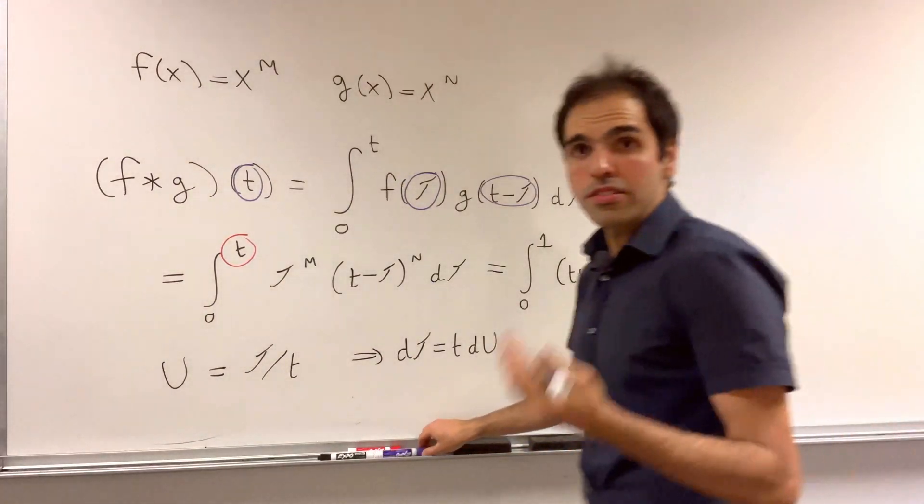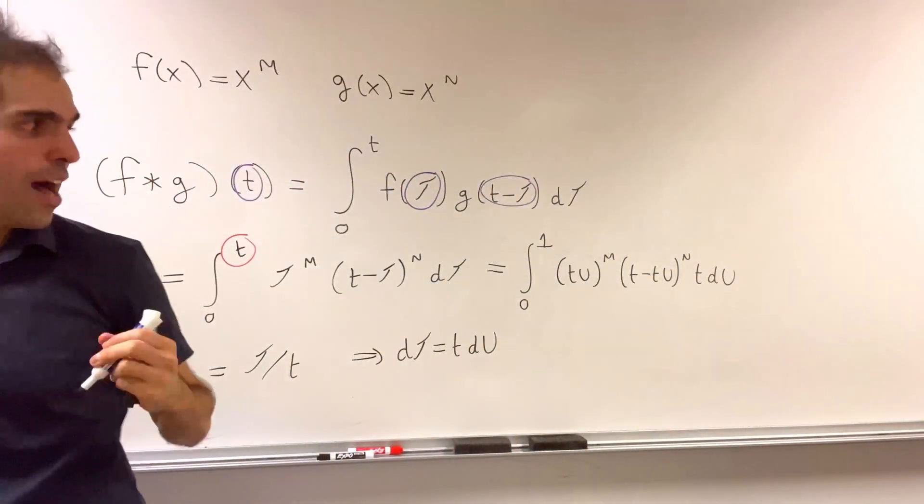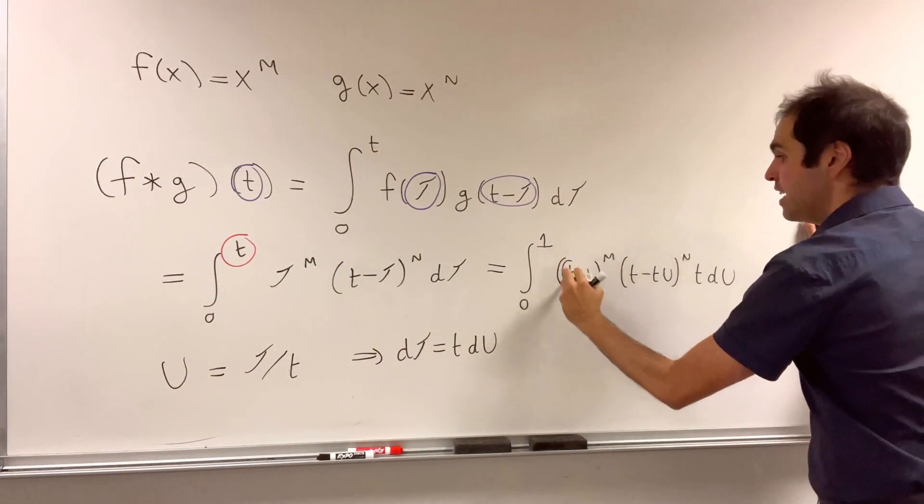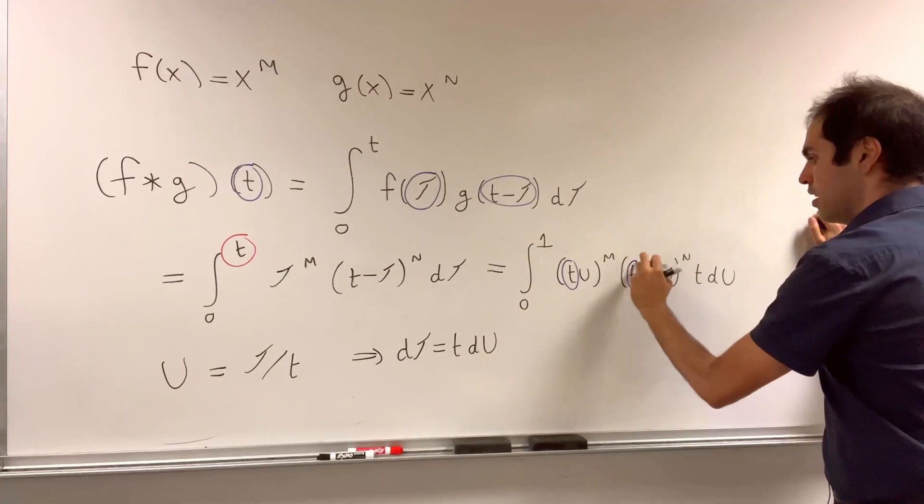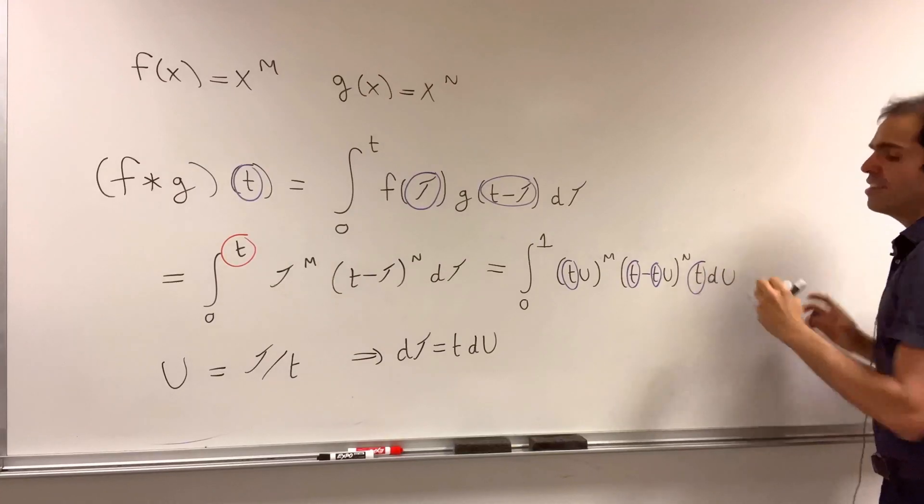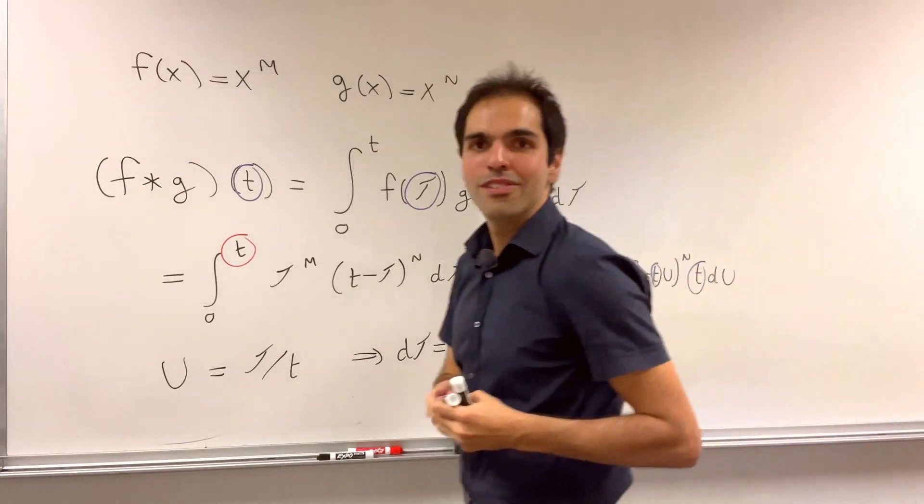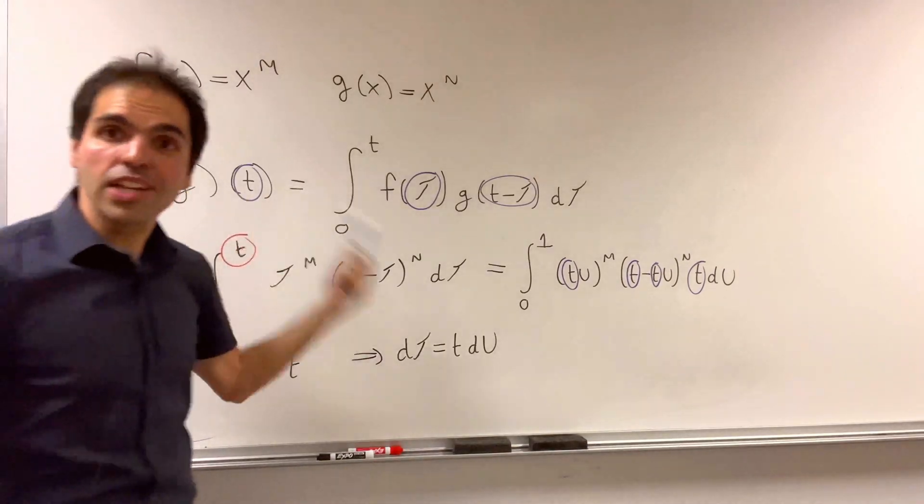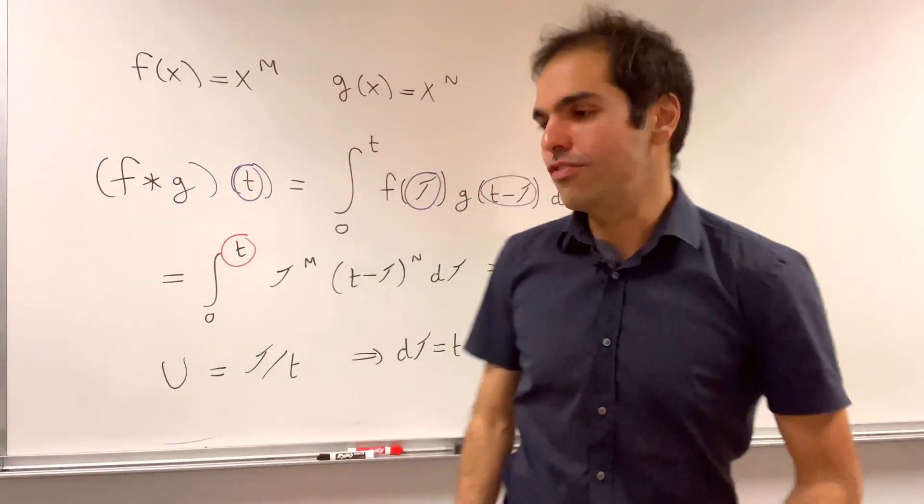And there's a nice miracle that is happening here, because notice there is a t that comes out, another t that comes out, another t that comes out. So, in this case, the convolution now becomes the following,